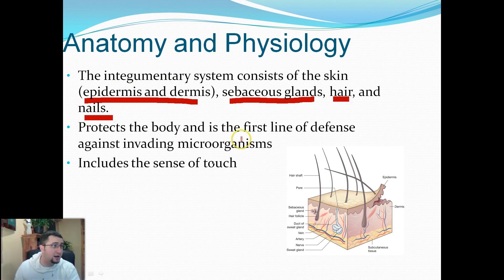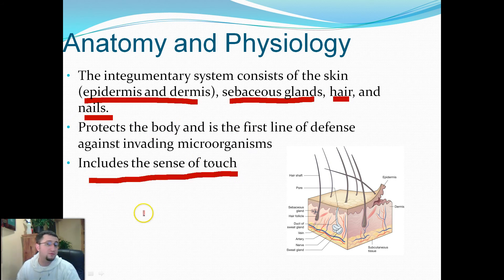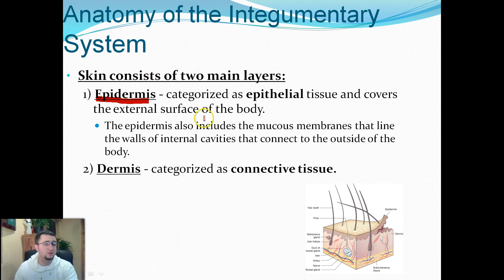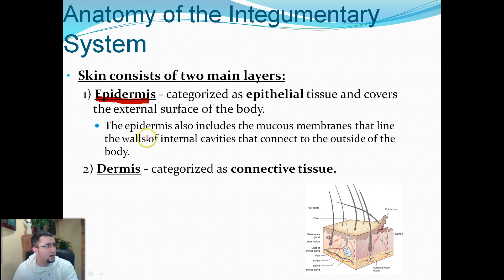Skin protects the body and is the first line of defense against certain microorganisms. We also have nerves in our skin that allow us to feel things, giving us the sense of touch. The skin consists of two main layers. We have the epidermis, which is categorized as epithelial tissue and covers the external surface of the body — everything on the outside. The epidermis also includes the mucous membranes that line the walls of internal cavities that connect to the outside of the body.